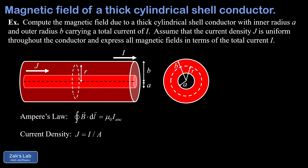At the bottom we have a reminder of Ampere's law, which is useful in cases with a high degree of symmetry. It states that the path integral of the magnetic field along an Amperian loop equals μ₀ times the current enclosed by that loop. Below that is a reminder of current density: current per unit cross-sectional area, written as I over A. An Amperian loop is already shown in the diagrams.